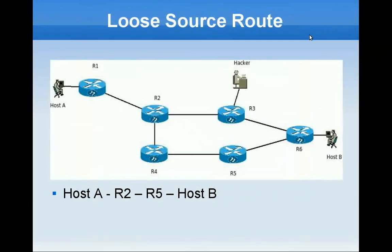There are two options when it comes to source routing. The first option is loose source routing. Loose source routing allows the packet to find a way to the next hop. For example, in this route: host A, R2, R5, host B. The packet starts at host A, looks for a path to R2, traverses the network through intermediate node R1 to R2. The next hop is R5, looks for a path from R2 to R5, traverses the network through intermediate node R6 to host B.